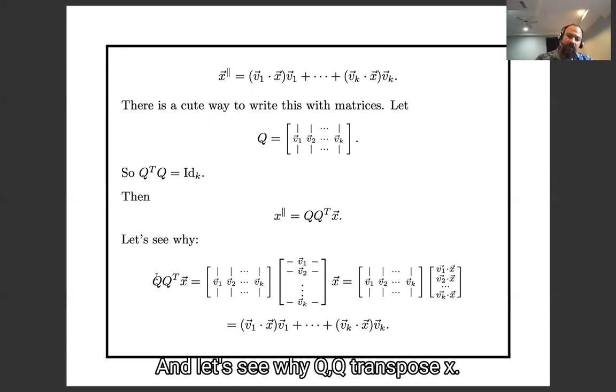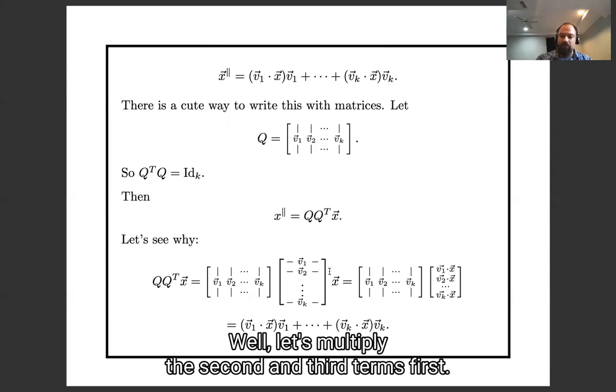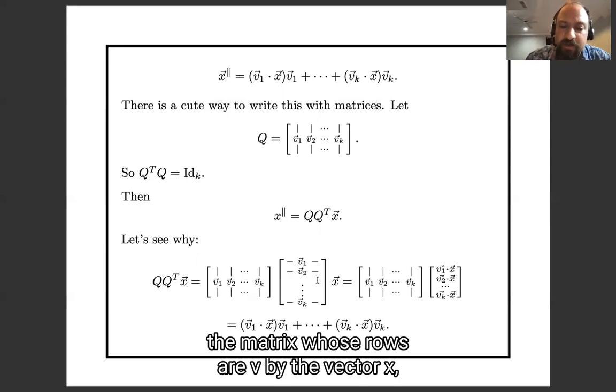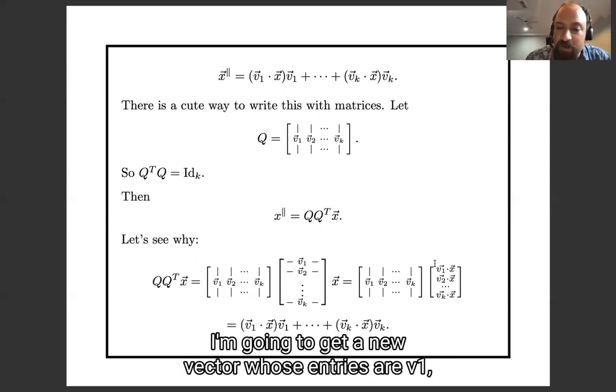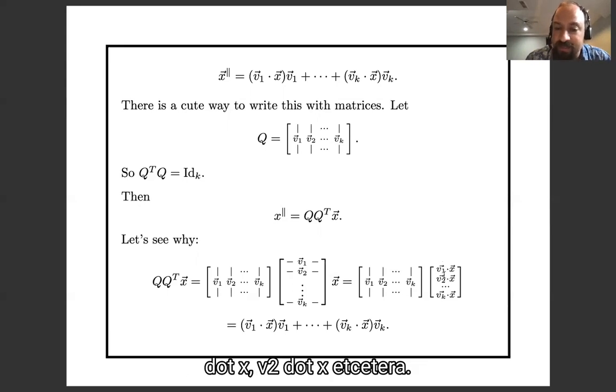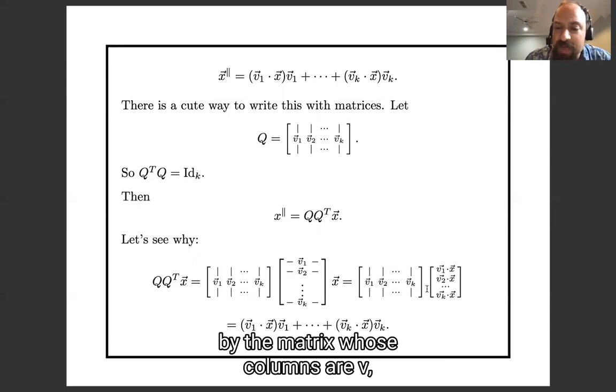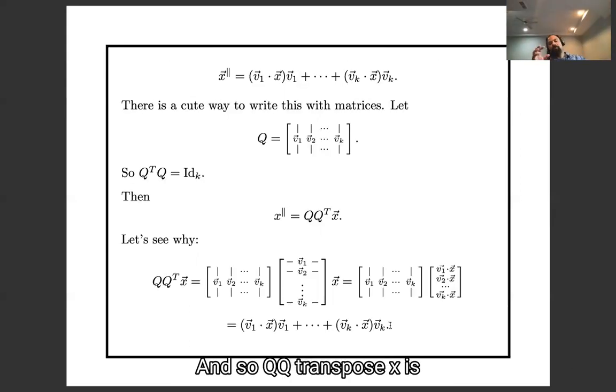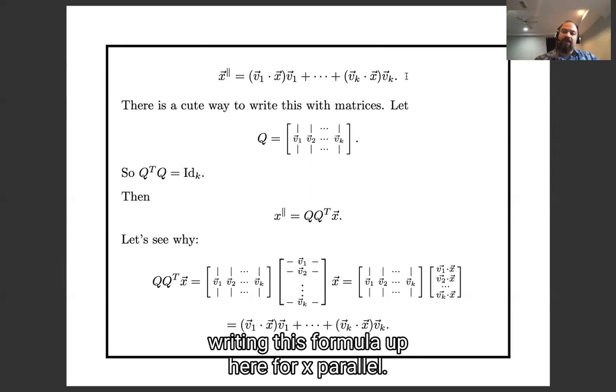And let's see why Q Q transpose x. Well let's multiply the second and third terms first. When I multiply the matrix whose rows are v by the vector x, I'm going to get a new vector whose entries are v1 dot x, v2 dot x, etc. And when I then multiply that by the matrix whose columns are v, I'm going to get a linear combination of the columns, which will be this. And so Q Q transpose x is just a compact way of writing this formula up here for x-parallel.